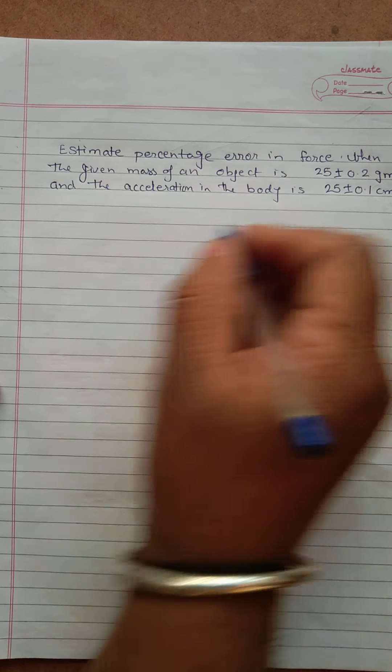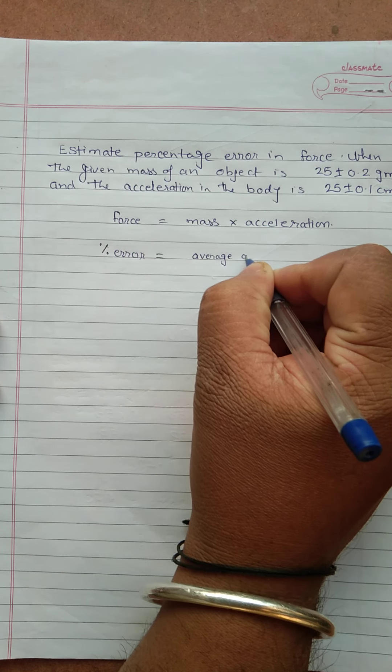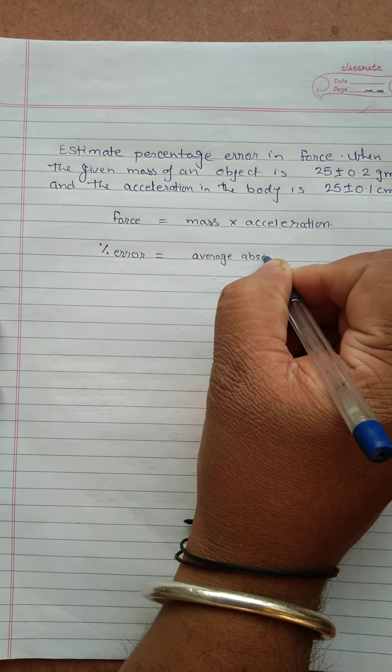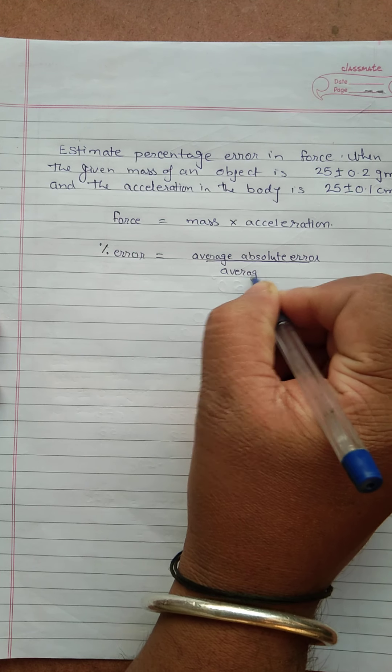And we also need to know what is the formula for percentage error. Percentage error is given as the average absolute error upon the average reading.